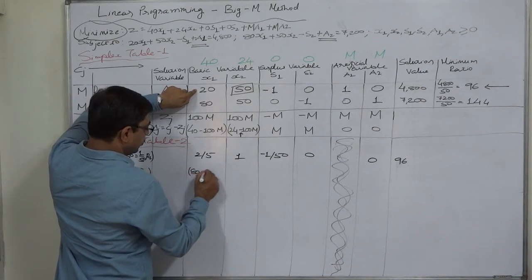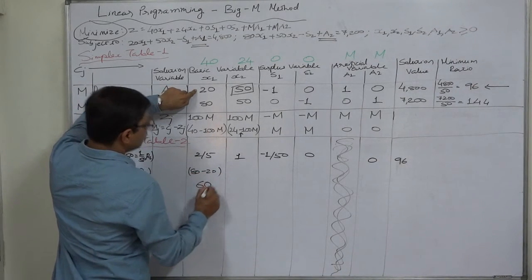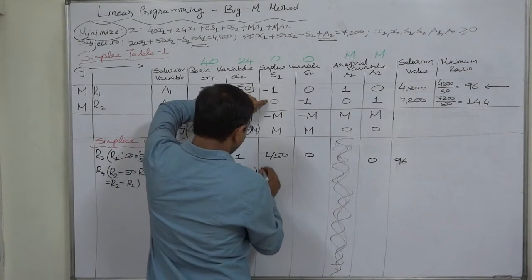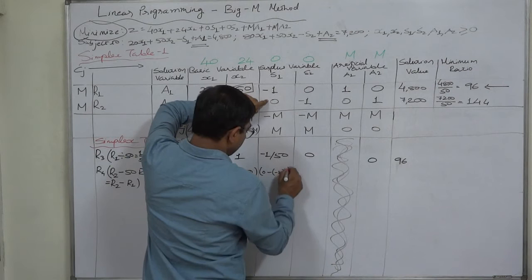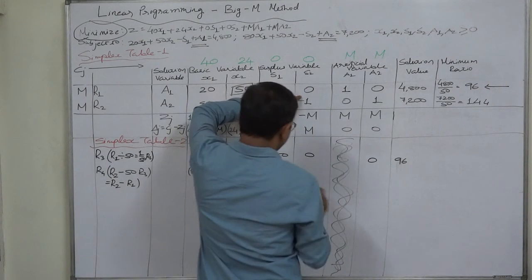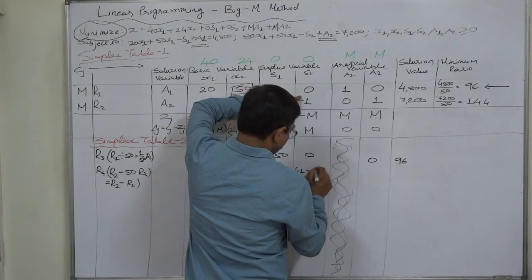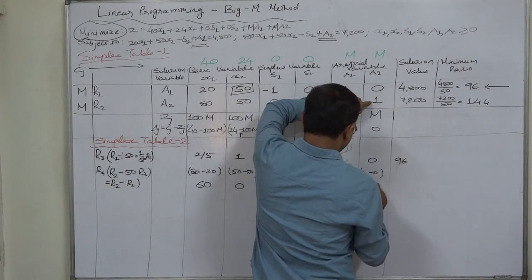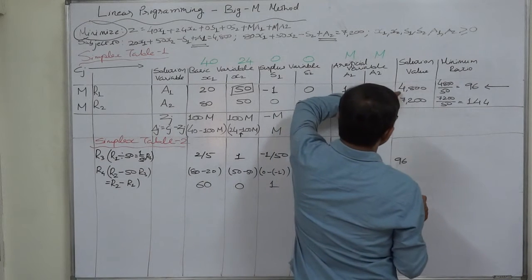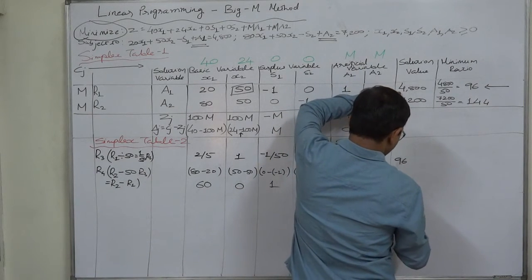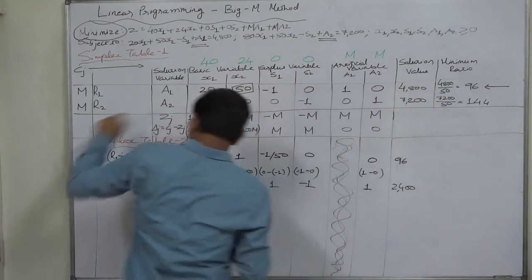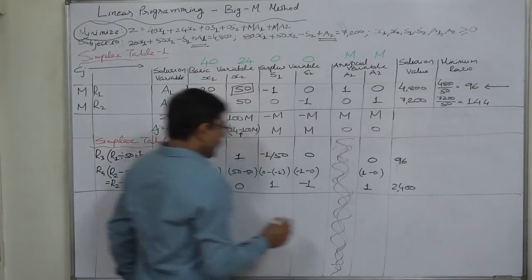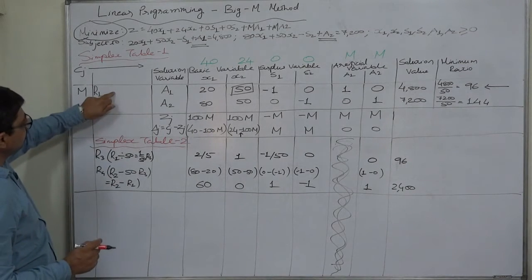20 minus 20 is... 80 minus 20 is 60. 50 minus 50 is 0. 0 minus minus 1 is plus 1 or positive 1. Minus 1 minus 0, it remains minus 1. 7200 minus 4800 is 2400.